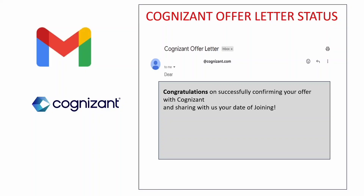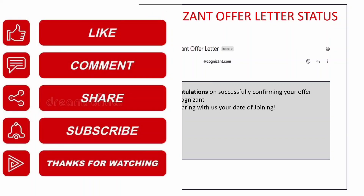As confirmation, you will receive a mail saying 'Cognizant Offer Letter Status — Congratulations on successfully confirming your offer letter with Cognizant' along with your date of joining. If you refresh the onboarding portal, the 'Review and Accept Offer' step will appear completed in green. This is how you create your Microsoft account and accept your Cognizant offer. Further videos will cover pre-joining formalities and background verification.